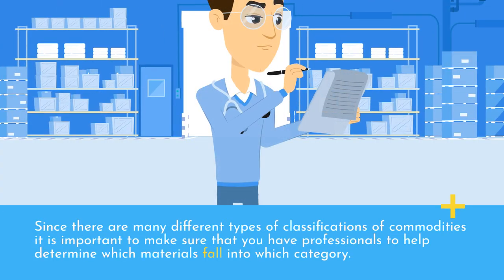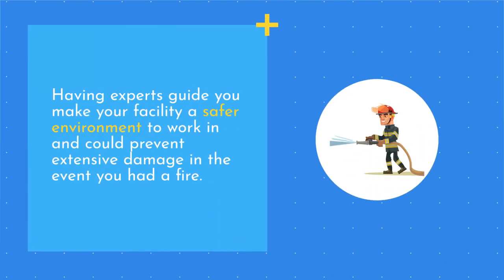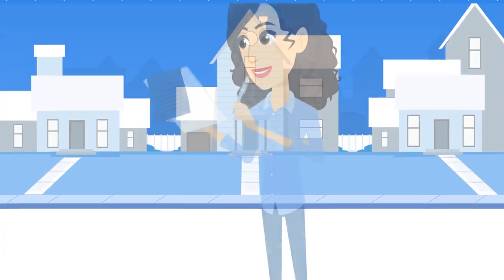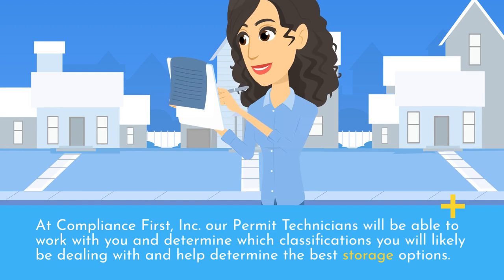Since there are many different types of commodity classifications, it is important to make sure that you have professionals to help determine which materials fall into which category. Having experts guide you makes your facility a safer environment to work in and could prevent extensive damage in the event of a fire. At Compliance First Incorporated, our permit technicians will be able to work with you and determine which classifications you will likely be dealing with and help determine the best storage options.